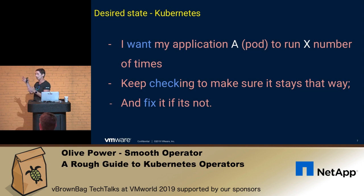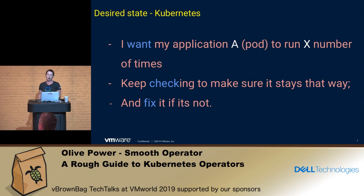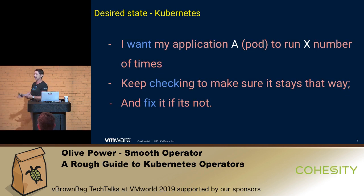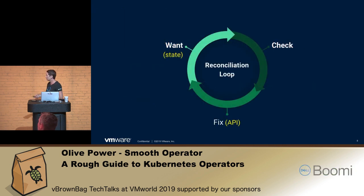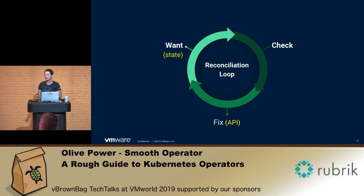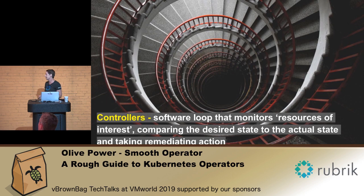You want Kubernetes to keep checking that it stays that way — X amount of instances of your application. You want it to reconcile, remediate, or fix it when it falls away from that, whether something breaks one of your instances or somebody tries to add an additional one. It will put it back to your desired state — say X equals five — always maintaining five instances. It's all the time doing what we call a reconciliation loop.